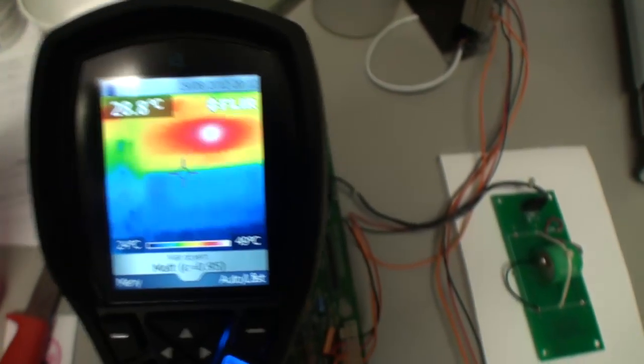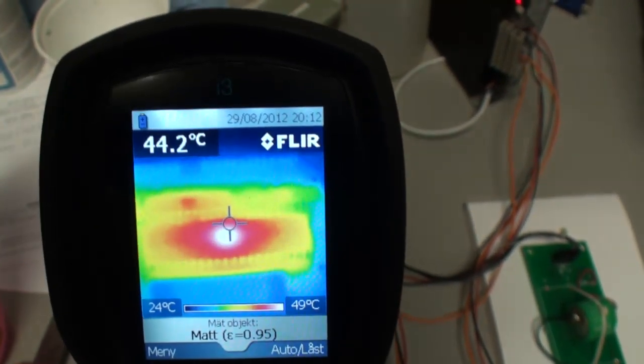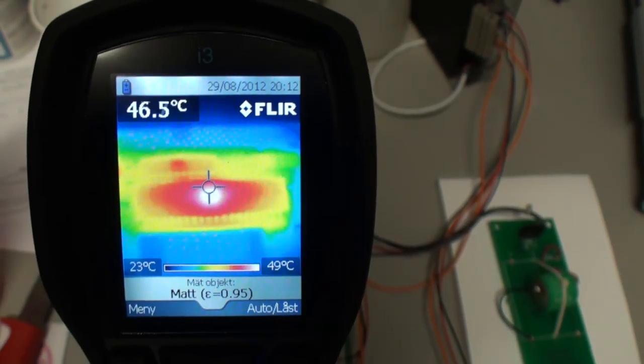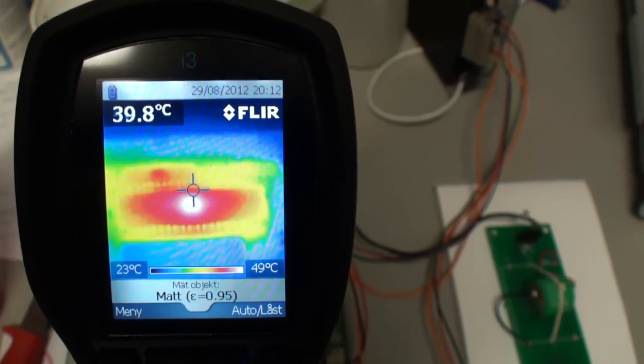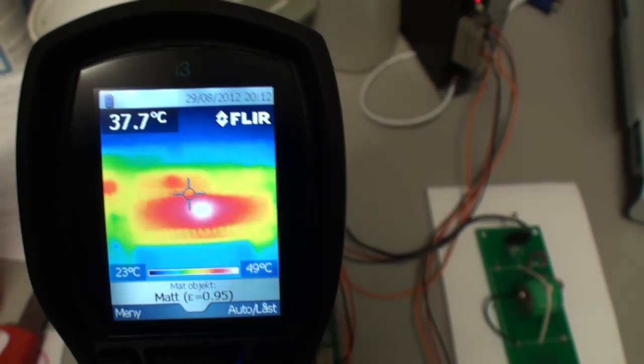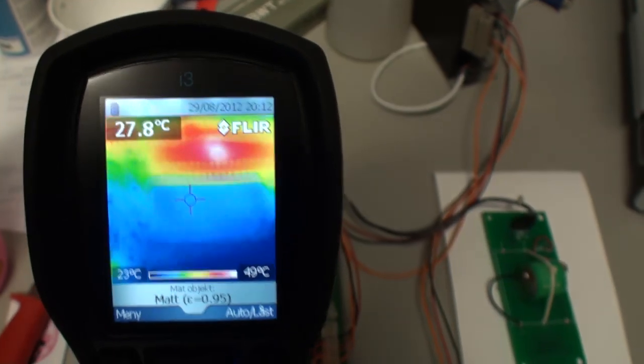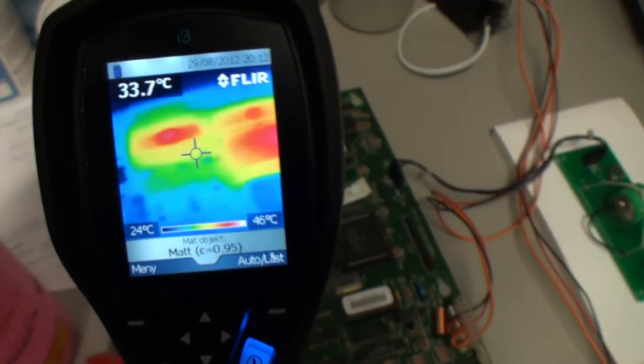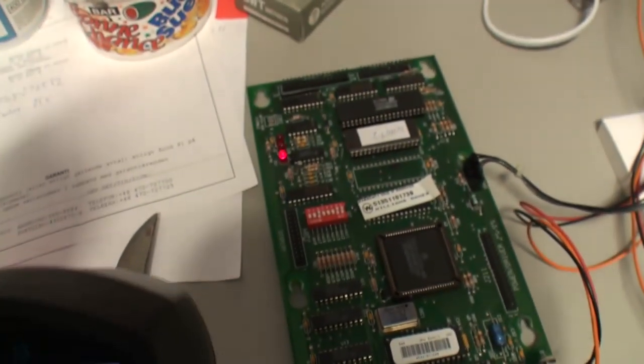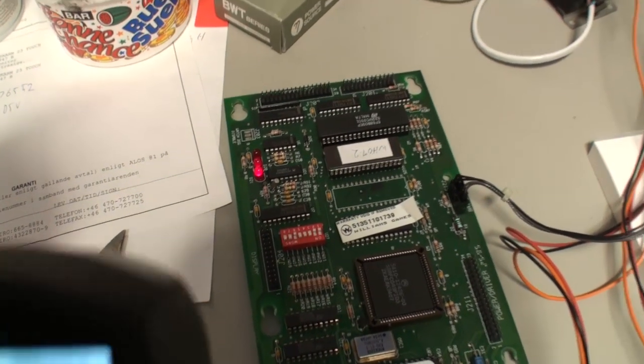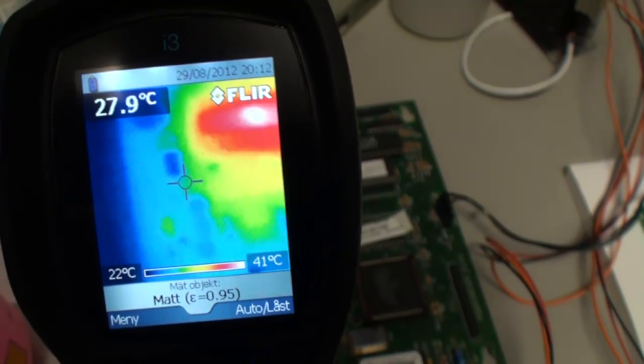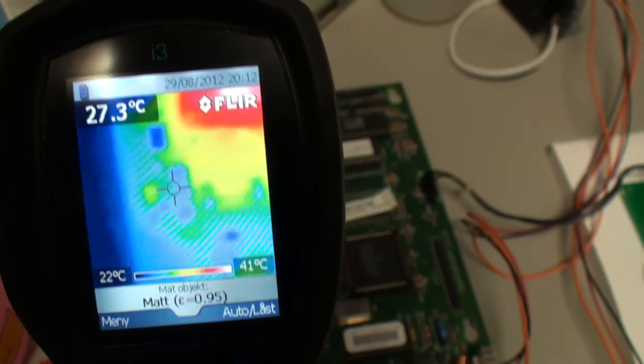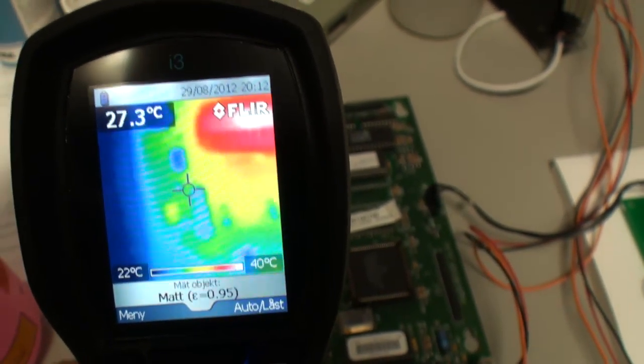See if we can get them closer. The resolution on this FLIR i3 is only 60x60 pixels, so it's not that great. Here we can see the LEDs but they don't show up on thermal. The only thing that shows up is the resistor on the side there.